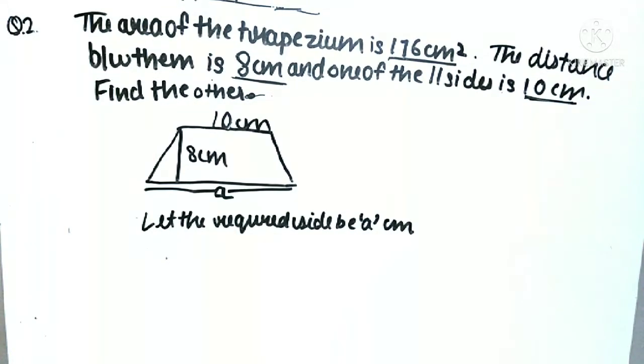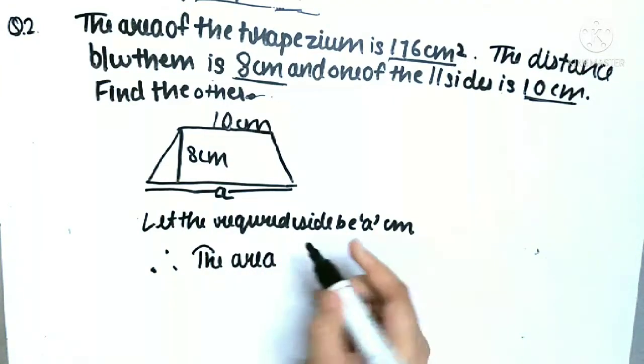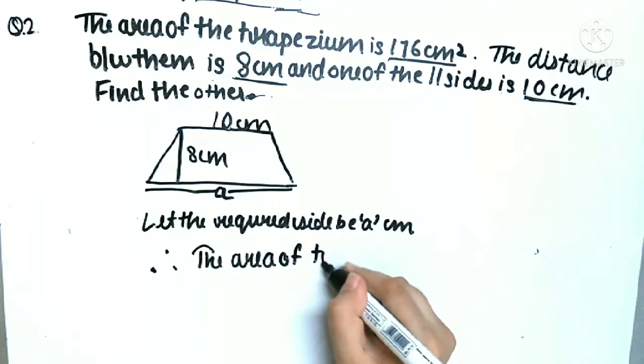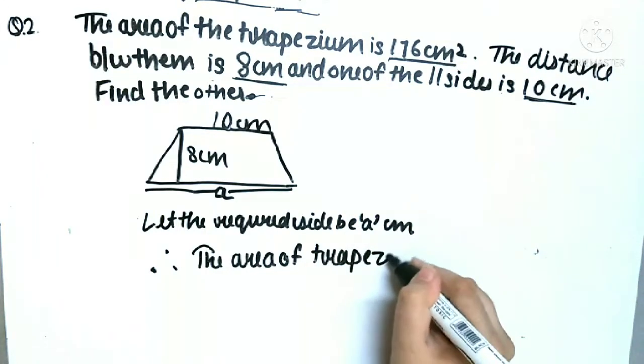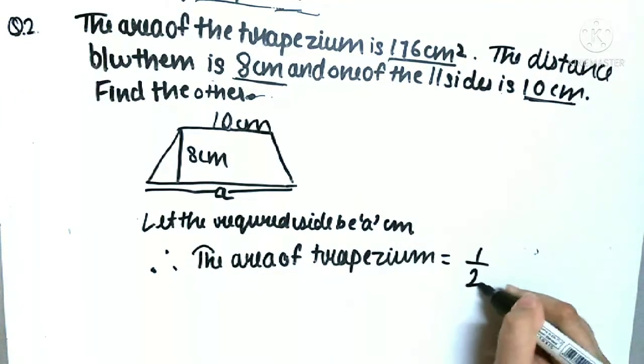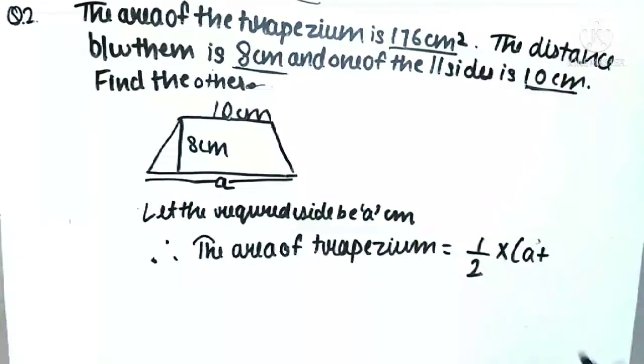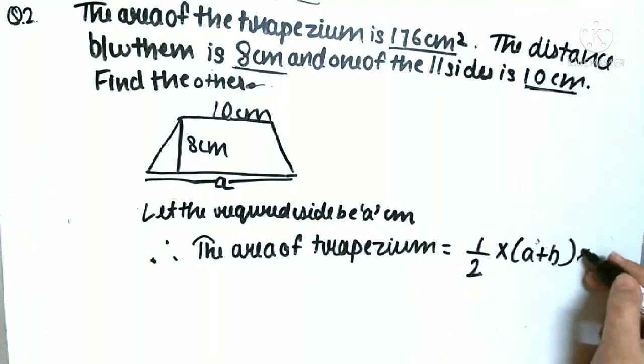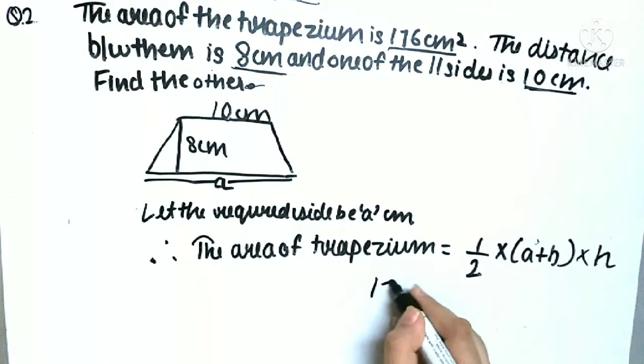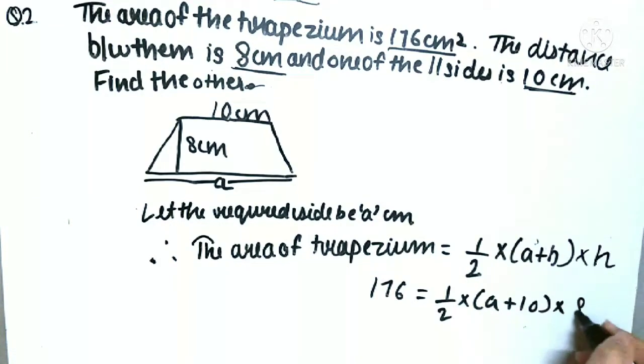Therefore, the area of trapezium will be half into (a + b) into h. That means 176 is equal to half into (a + 10) into 8.